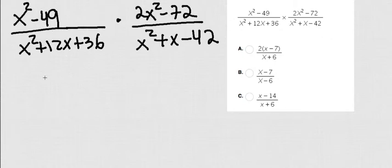Let's start with x squared minus 49. Well, this is the same as x plus 7 times x minus 7.